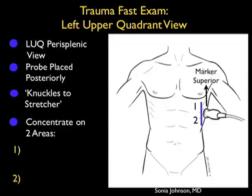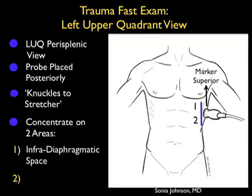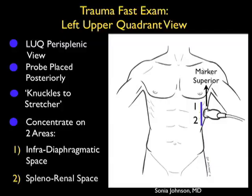Here's a slide reviewing how to perform the left upper quadrant view of the trauma fast exam. As the spleen offers less of an acoustic window on the left upper quadrant, we need to bring the probe in from a more posterior position — thus the mantra: knuckles to stretcher. Optimally, we're using a smaller footprint probe that can get in between the ribs and get a good view into the left upper quadrant area.